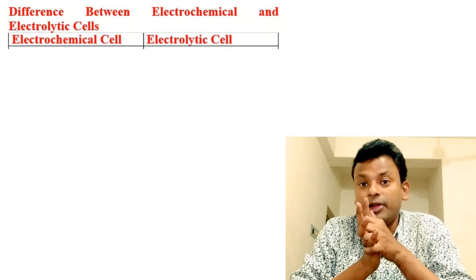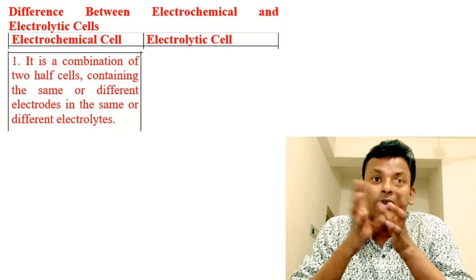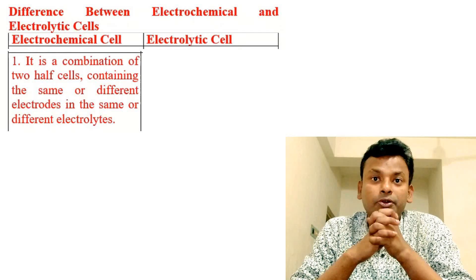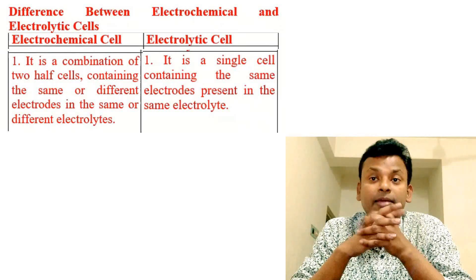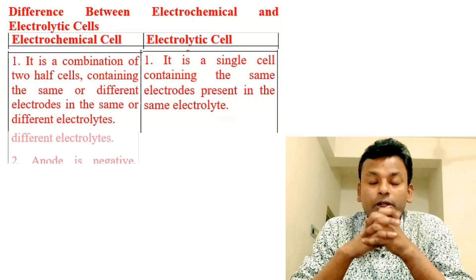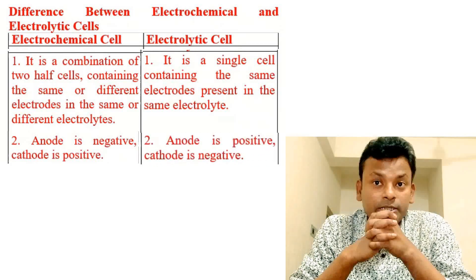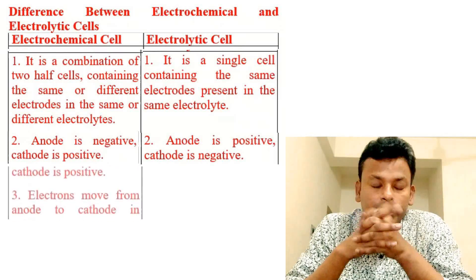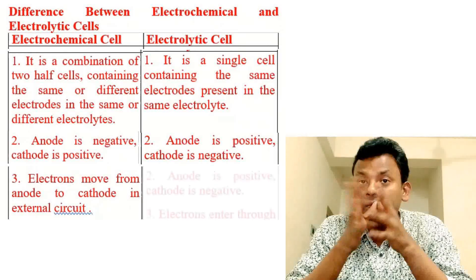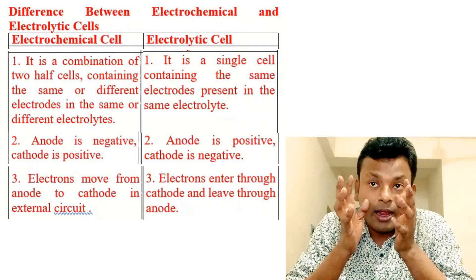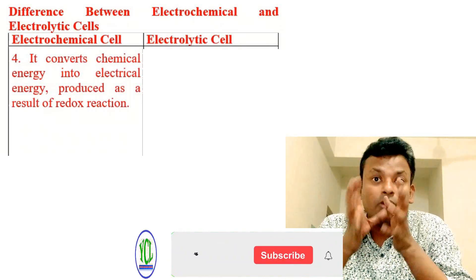Differences between electrochemical and electrolytic cells: First, an electrochemical cell is a combination of two half cells containing the same or different electrodes in the same or different electrolytes; an electrolytic cell is a single cell containing electrodes in the same electrolyte. Second, in an electrochemical cell the anode is negative and the cathode is positive; in an electrolytic cell the anode is positive and the cathode is negative. Third, in an electrochemical cell electrons move from anode to cathode in the external circuit; in an electrolytic cell electrons enter through the cathode and leave through the anode.